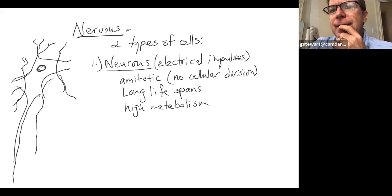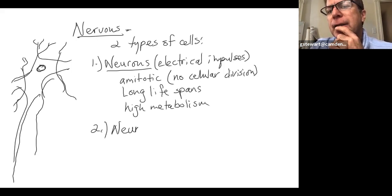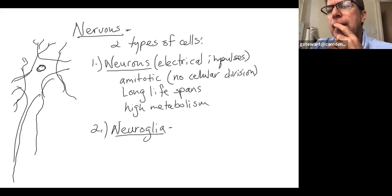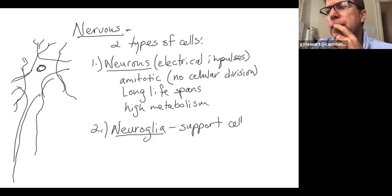The second class of cells in nervous tissue is neuroglia — support cells. There are about six specific types. They do not conduct electrical impulses. They'll be covered in detail when we study the nervous system.